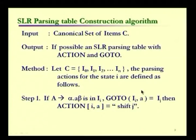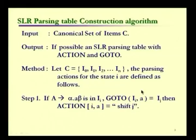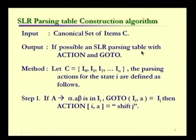We shall see how to use these LR(0) items to compute the LR parsing table. There is a simple algorithm that computes the SLR parsing table from the given LR(0) items. The input to this algorithm is the canonical set of items — the 12 states i0 through i11 obtained from the expression grammar. The output is the SLR parsing table with two components: the action component and the goto component.